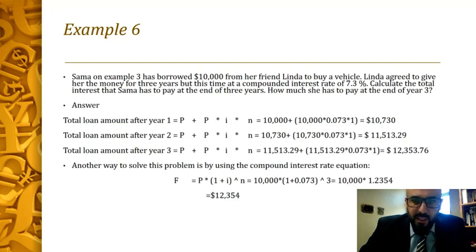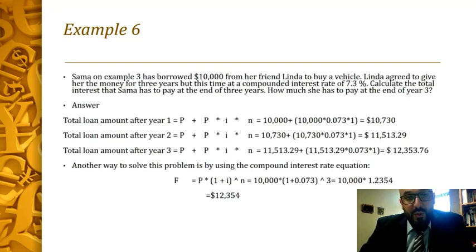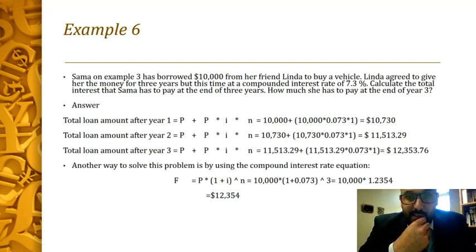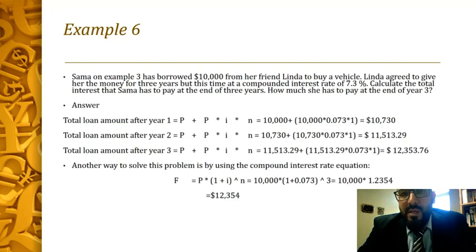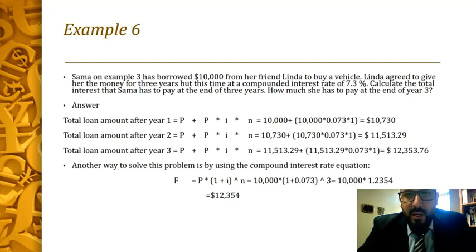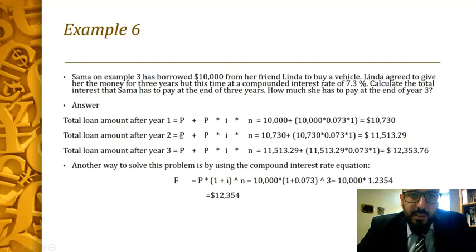Let's revisit example three using compound interest. Sama borrowed ten thousand dollars from Linda to buy a vehicle. Linda agreed to lend the money for three years, but this time at a compounded interest rate of 7.3%. We need to calculate the total interest Sama has to pay at the end of three years. There are two options: year-by-year calculation, or using the formula F equal to P times one plus i to the power of n. I'll go year by year to illustrate the concept.